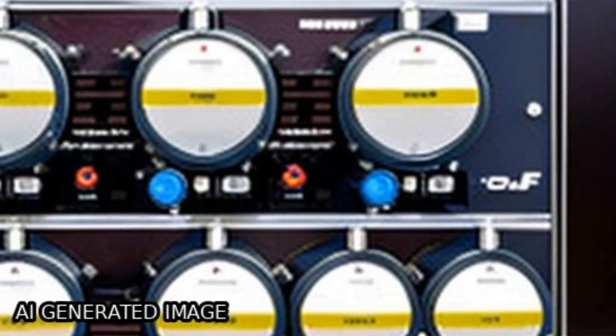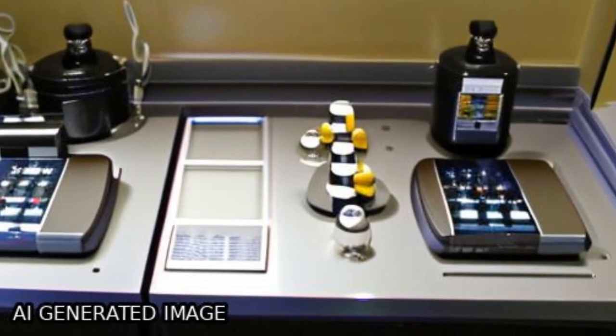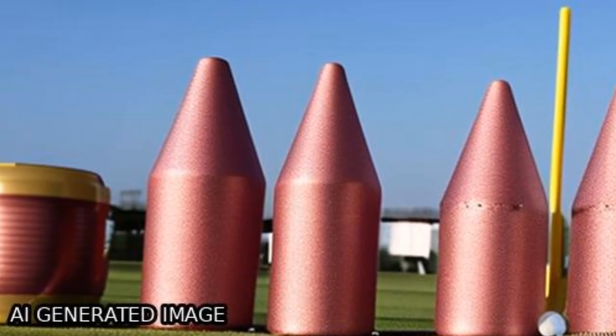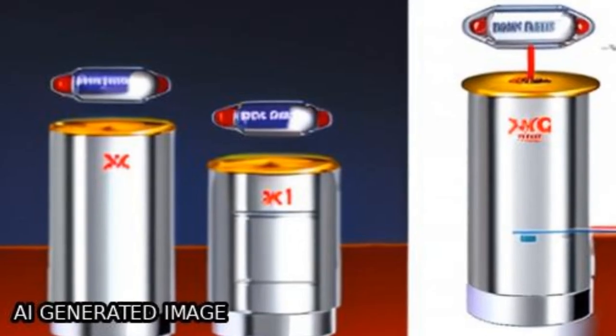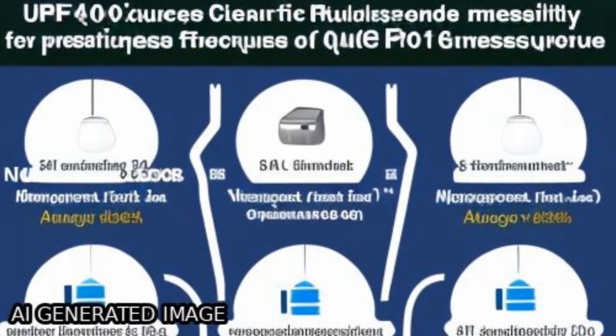Meanwhile, the overdoped sample with x equals 0.075 also exhibits a positive pressure effect on Tc, achieving an enhancement of 13K under a pressure of 2.3 GPa.